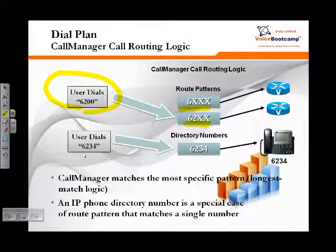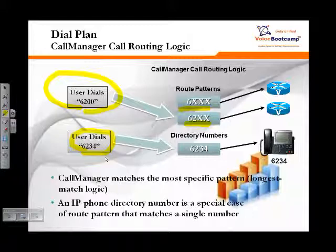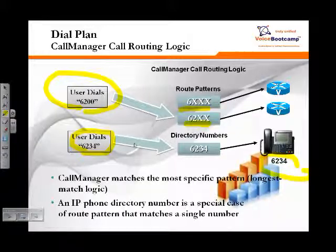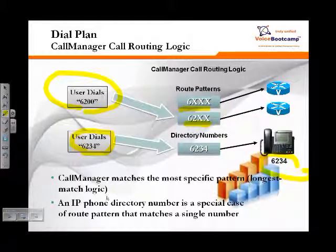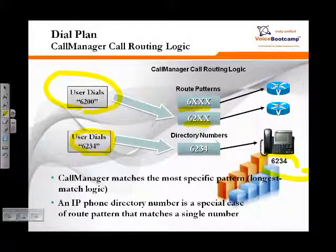Now, if the user dials a number like 6234, which happens to match an extension assigned to a phone, it will always ring that extension, because the directory number is a special route pattern that has the highest priority of match. Directory numbers are more specific matches because they are the exact value.